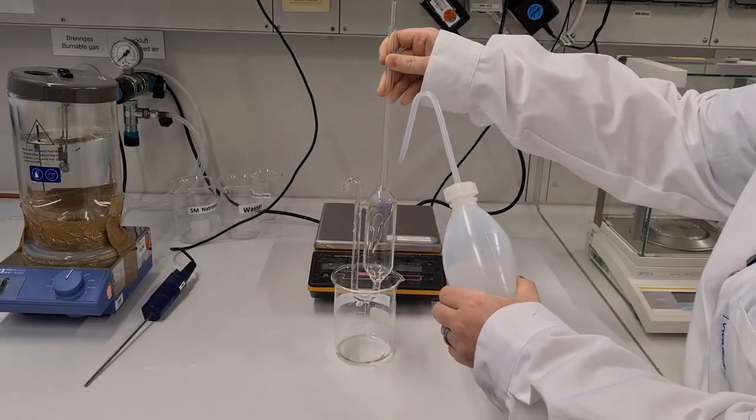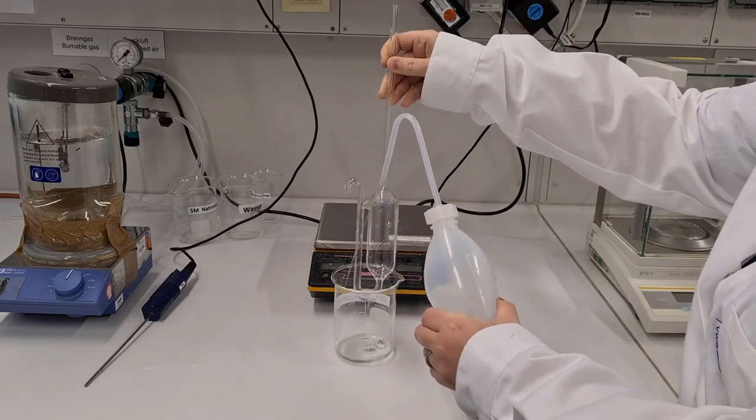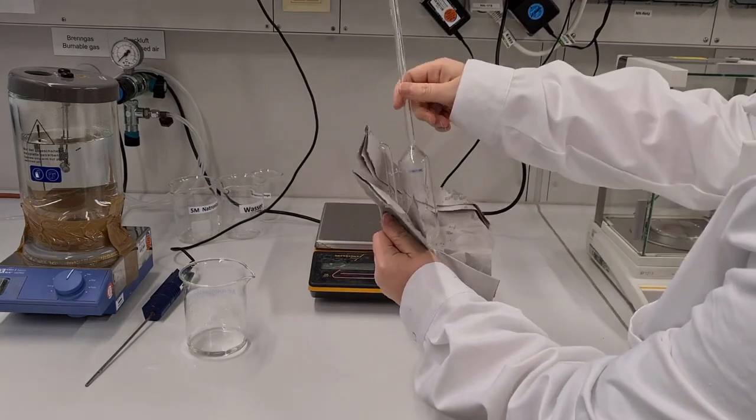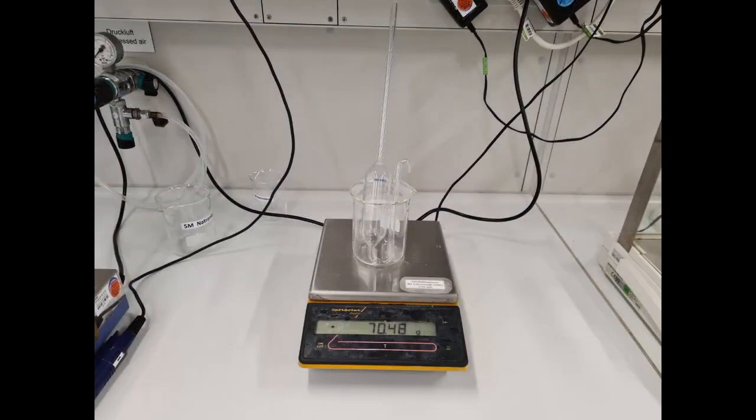The pipette is then removed from the dual flask, dried, and weighed. The amount of non-reacted hydrochloric acid has to be taken into consideration for the calculation.